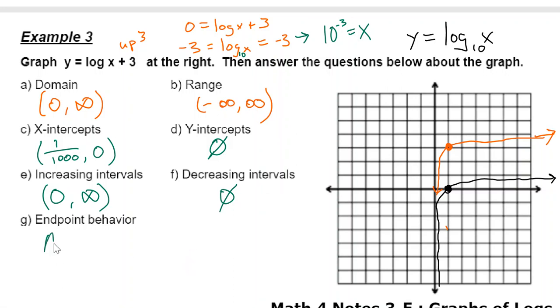The endpoint behavior, we're going to have to say as x approaches, it doesn't approach negative infinity. It does get really, really close to 0. As x is approaching 0, y is going down, y is approaching negative infinity. As x approaches positive infinity, then y is also going up. And so that's what those two should look like.